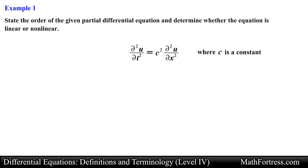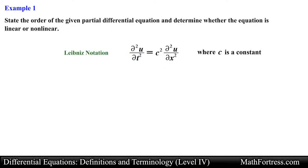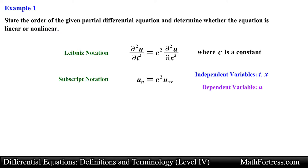State the order of the given partial differential equation and determine whether the equation is linear or nonlinear. Here we are face to face with a PDE. Notice that this equation contains partial derivatives — this is the defining characteristic of a PDE; it must contain partial derivatives. Notice that this PDE is written using Leibniz notation. We can also rewrite this PDE using subscript notation. Like ODEs, we need to identify the independent and dependent variables. For this PDE, the dependent variable is u and the independent variables are t and x. Recall that PDEs may contain two or more independent variables, as opposed to ODEs which contain only a single independent variable.